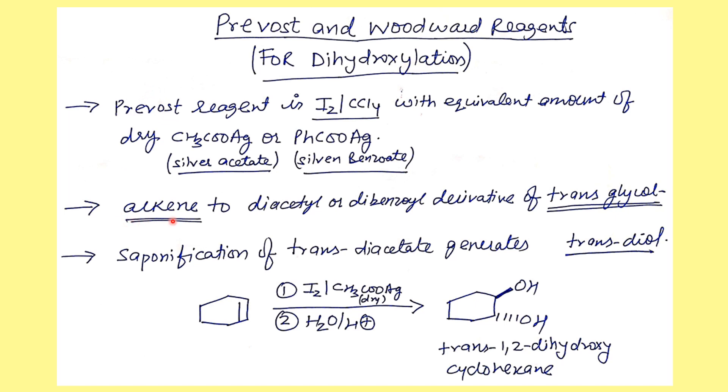What we end up getting is we start from the alkenes and get the trans-glycerol, either the diacetyl or dibenzoate derivative depending upon the silver salt we use, and then this is subjected to saponification to get the trans-diol.